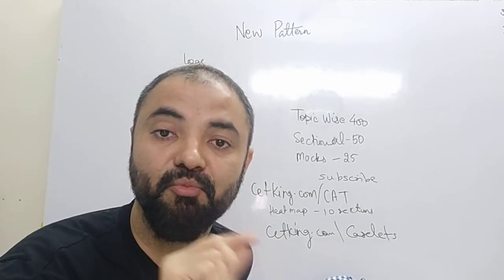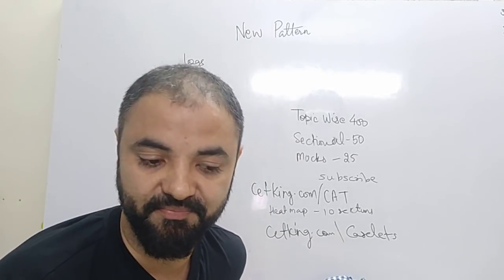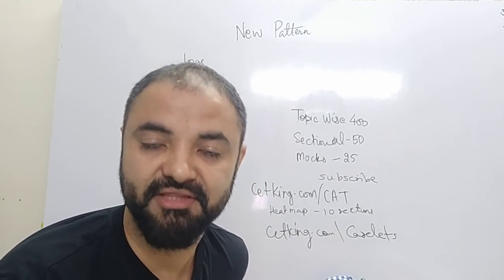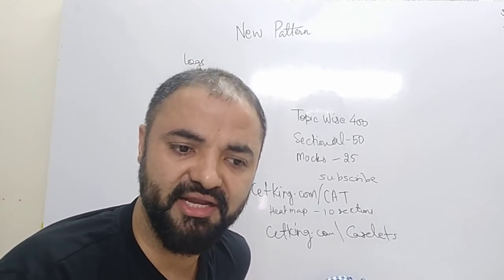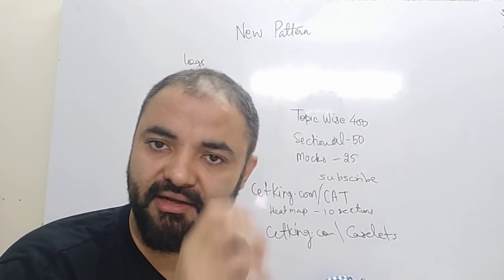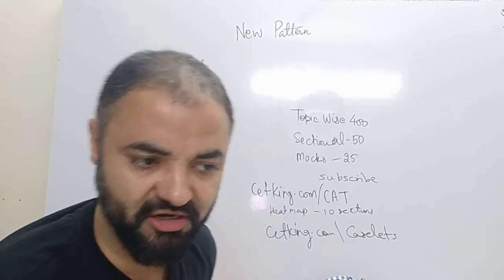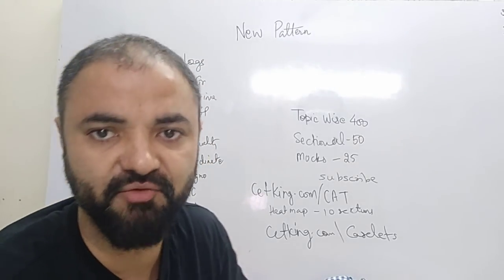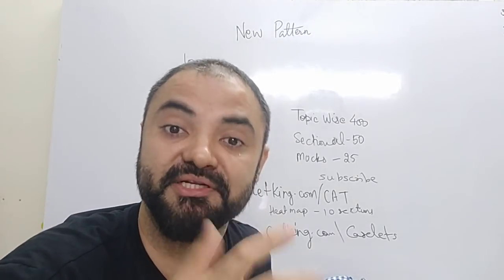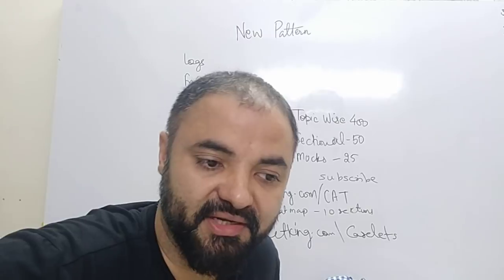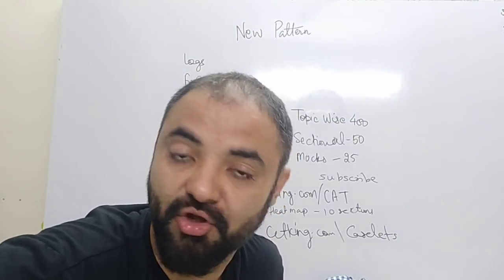The CAT DI and Logic section is the most distinct part of the CAT exam. Because the moment you talk about DI, what comes to mind is the calculation part. The moment you talk about Logic, what comes to mind is relationships, puzzles, and all those kinds of questions. But CAT has evolved over the last 5 years.